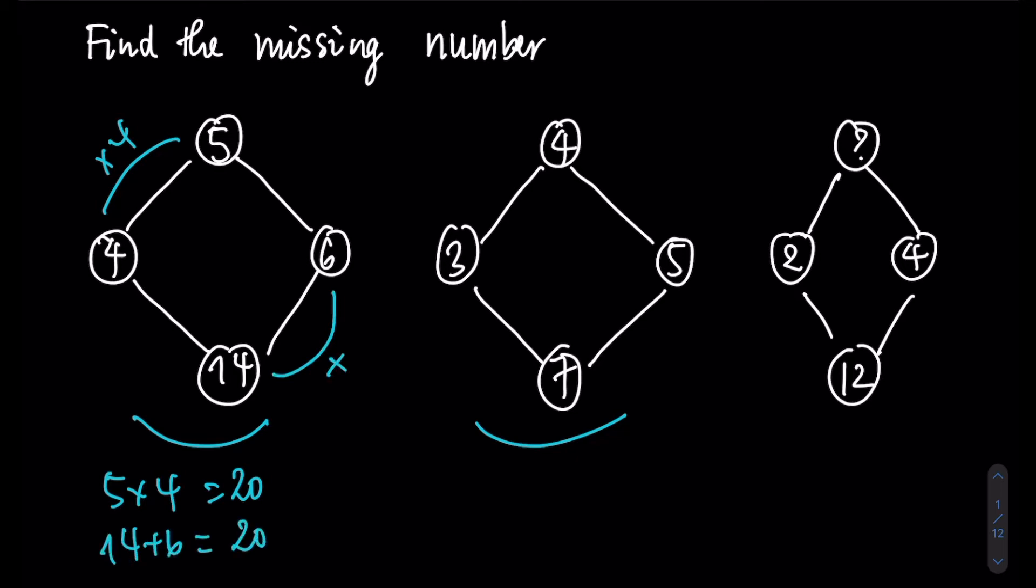Now we check the second pattern whether we get the same answer. 3 times 4 gives 12, and 7 plus 5 gives 12 as well. Therefore, the third pattern will follow exactly the pattern of the two previous ones.